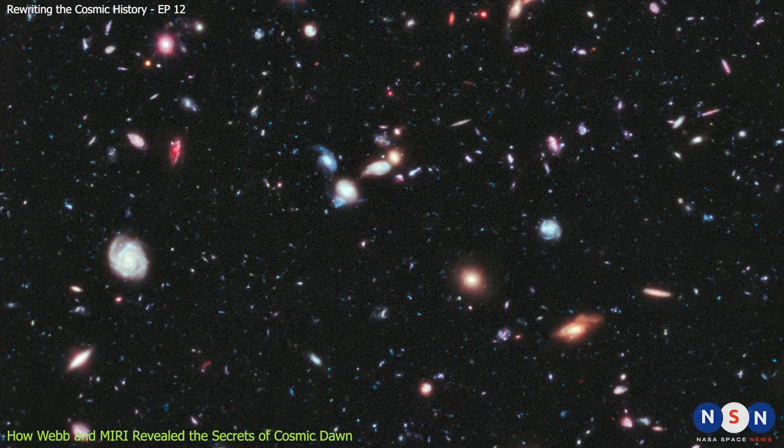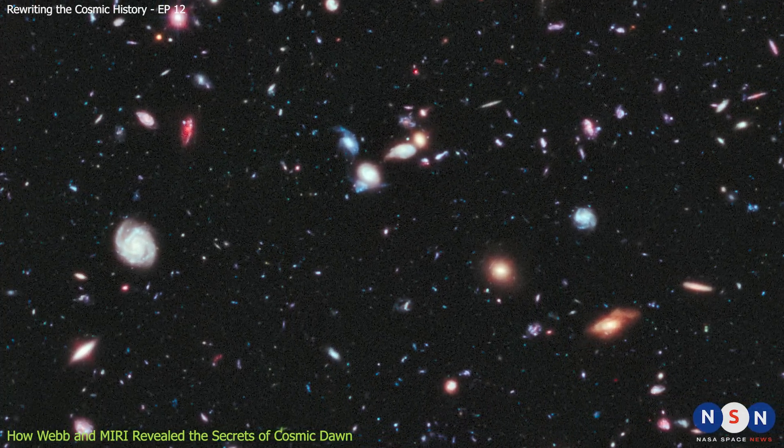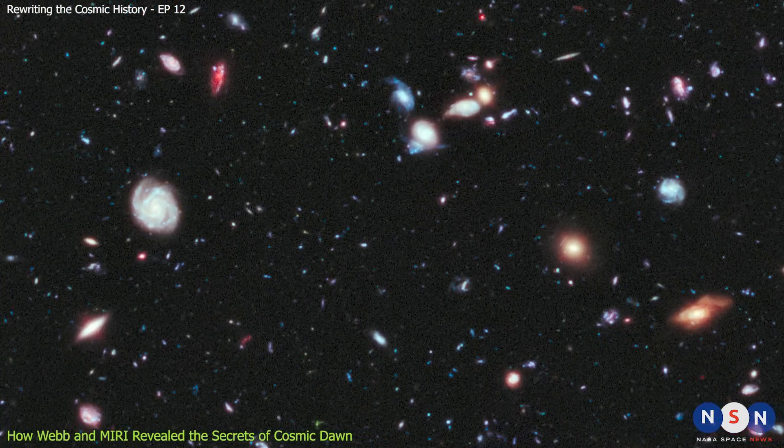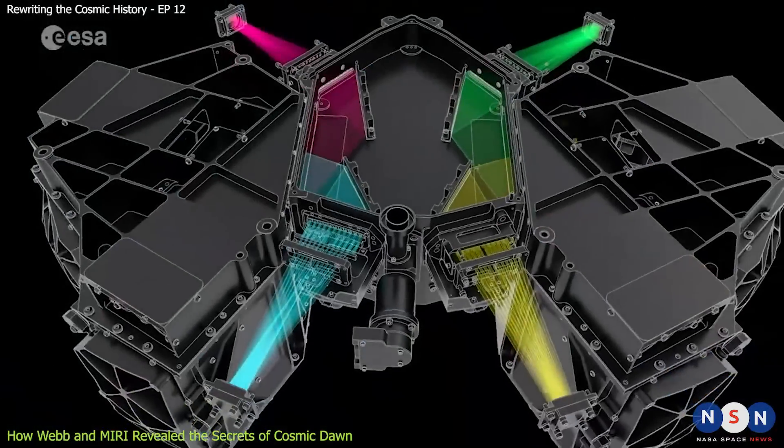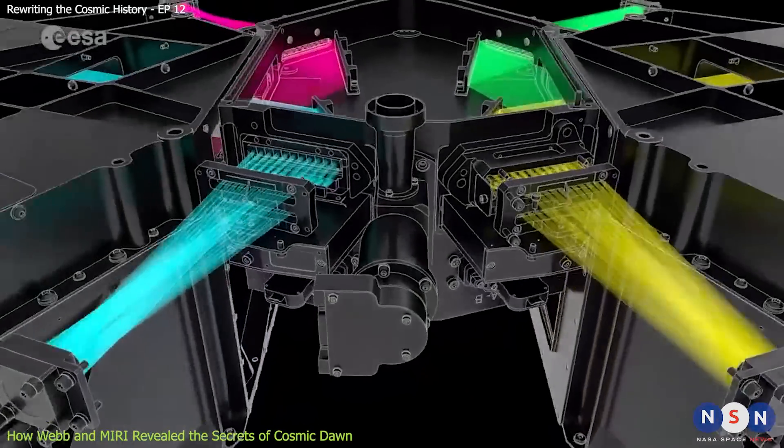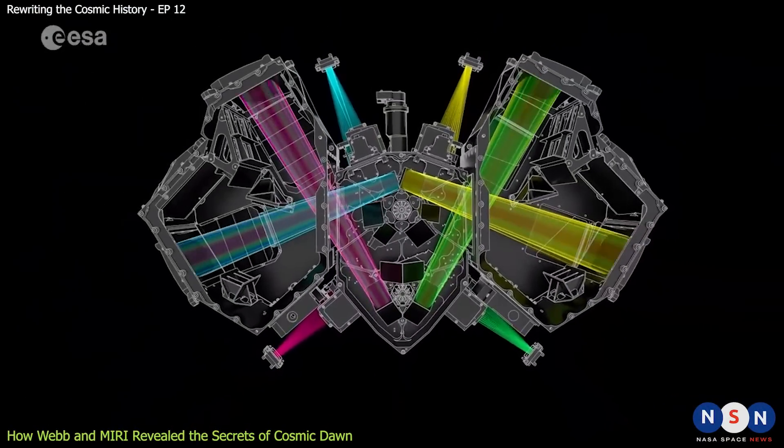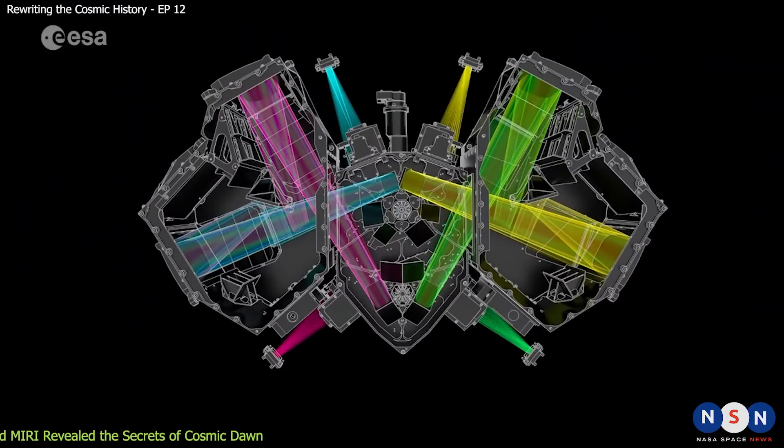This is a stunning achievement, because it shows that Webb can see star formation in individual galaxies during this epoch, something that no other telescope can do. But how did MIRI see star formation in these galaxies? And what does this discovery tell us about cosmic dawn? We will answer these questions in the next section.